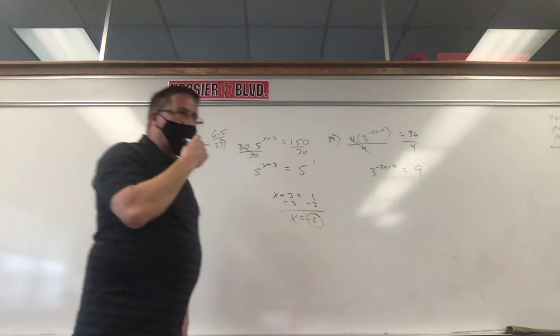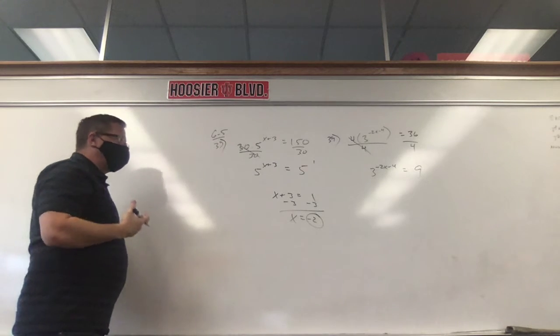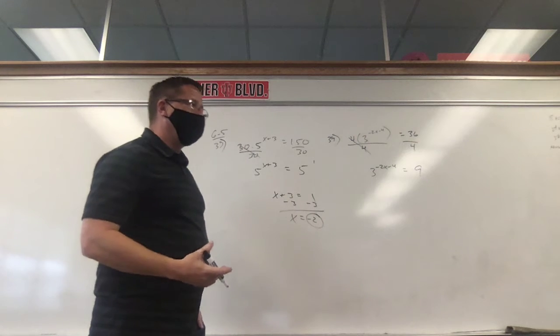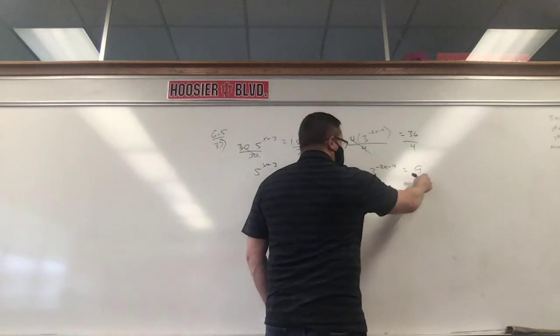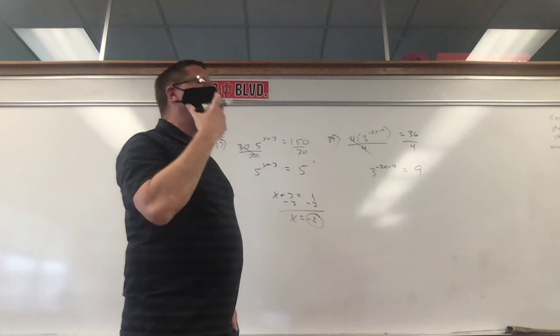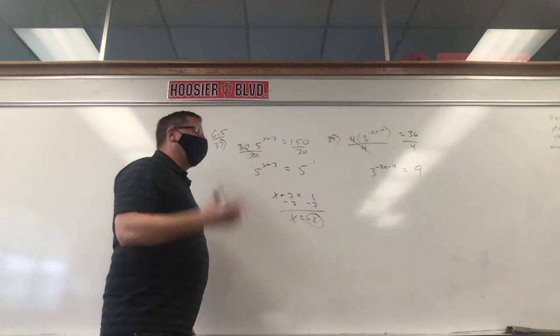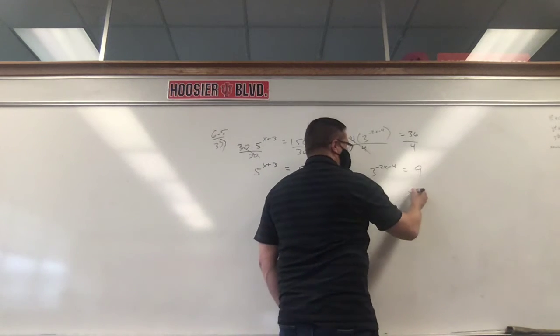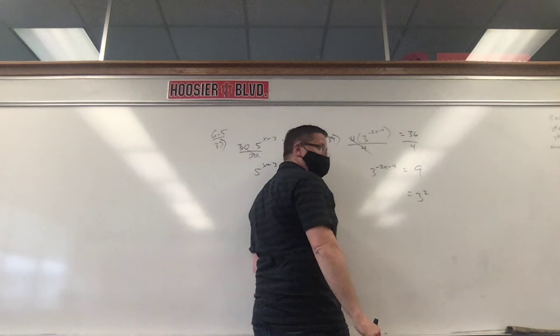Now here's where it's just a little bit tougher. Our bases are not the same. We did this yesterday, though. If the bases aren't the same, make them the same. We could rewrite 9. Now I know you could say, well, that's 3 times 3, and you're not wrong. But we don't want to write it as a times problem. We want to write it as a base to a power. So another way of saying 3 times 3 is 3 to the power of 2, 3 squared.